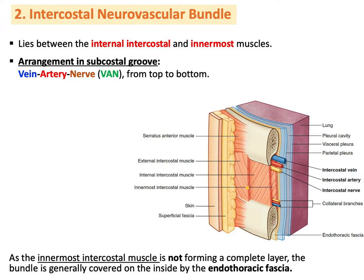We have a neurovascular bundle — artery, vein, and nerve — called the intercostal neurovascular bundle. Remember when we talked about the upper and lower border of the rib, we mentioned the costal groove in the lower border of a typical rib. This costal groove contains these structures. The neurovascular bundle is located between the internal intercostal and innermost intercostal muscles.